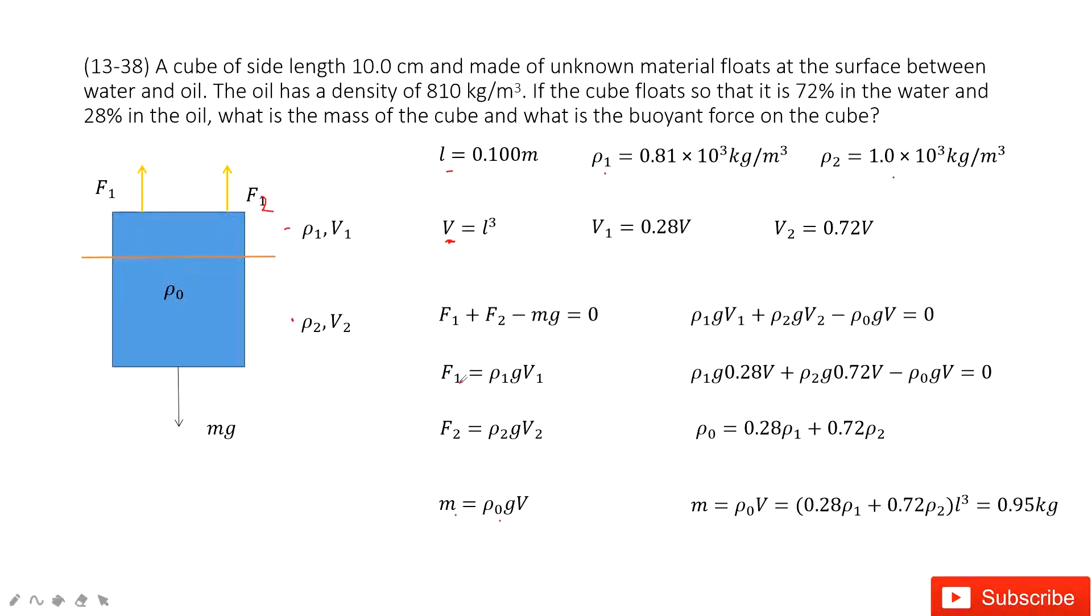Then we input F₁, F₂, and mass into the force balance equation. Then we substitute V₁ and V₂ to get the expression for ρ₀, the density of this cube.